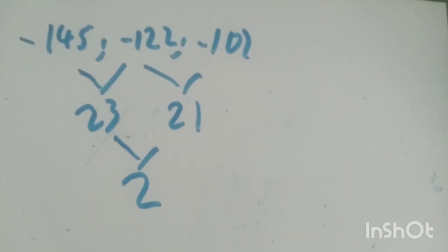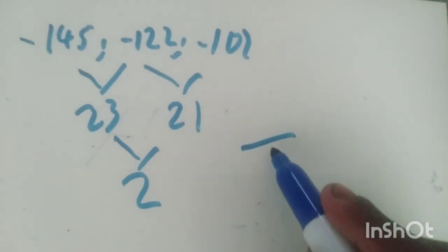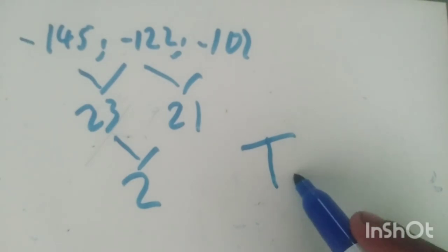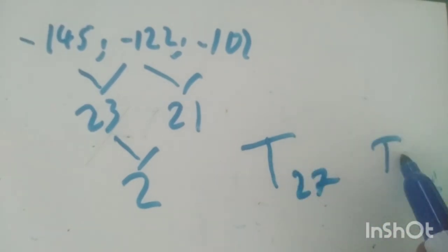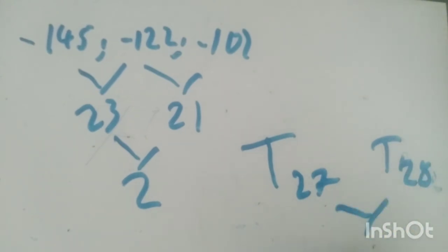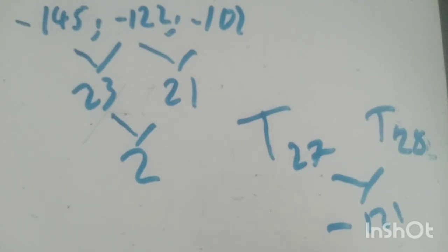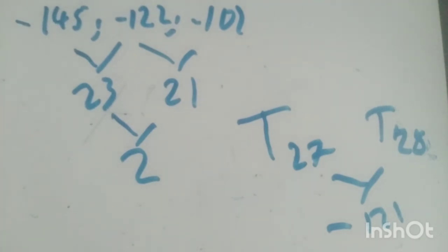They say: between which two terms of the quadratic number pattern will there be a difference of negative 121? For instance — and this is just an example, not an answer — let's say between T27 and T28 the first difference is negative 121. So it can be between T27 and T28, or between T32 and T33. Sometimes they will say between which two consecutive terms — consecutive just means they're following each other.